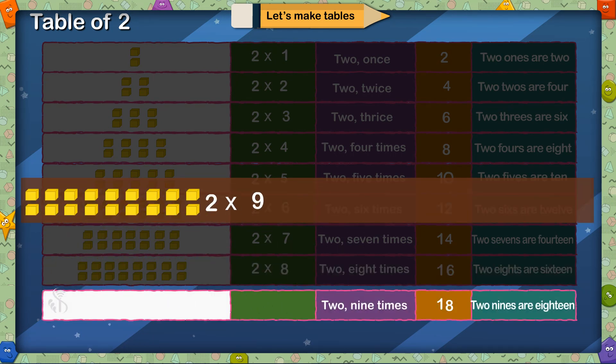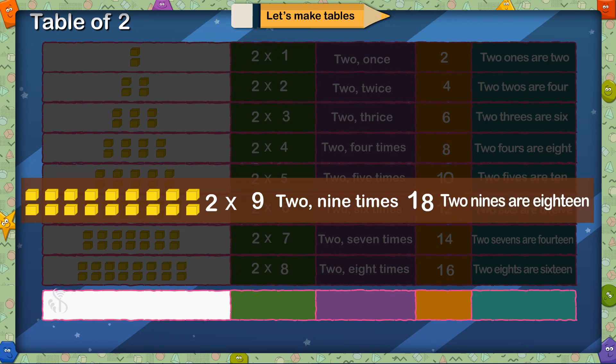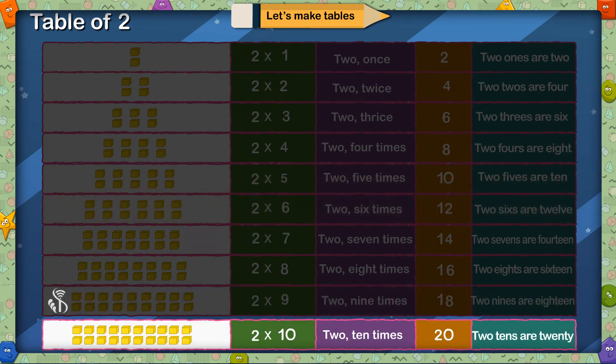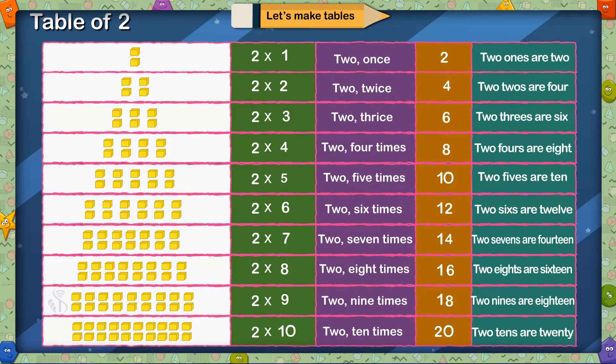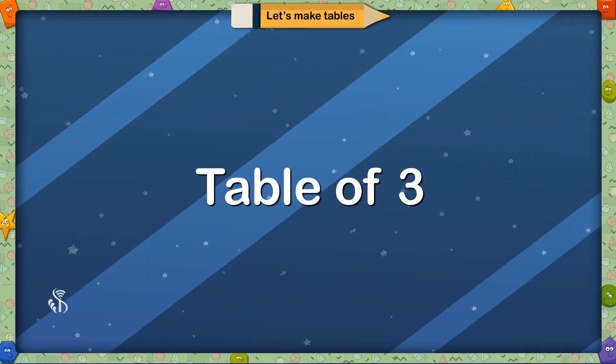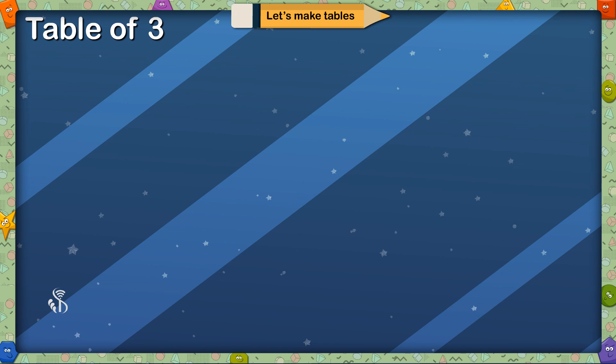2 multiplied by 9, 2 9 times is 18, 2 9s are 18. 2 multiplied by 10, 2 10 times is 20, 2 10s are 20. Table of 3. Now we will compile 3 times table.